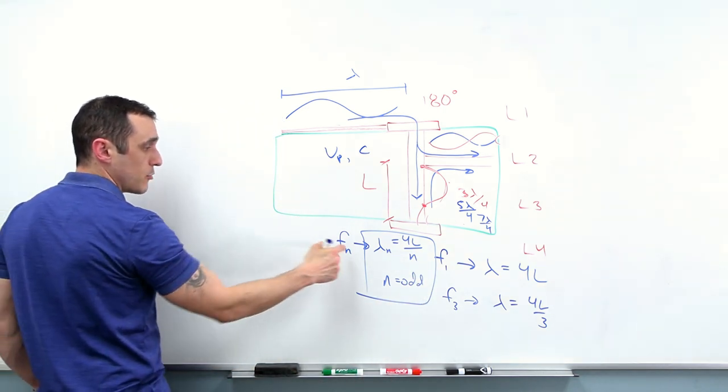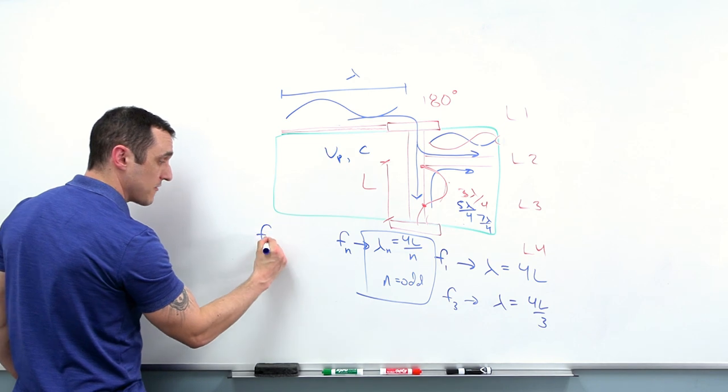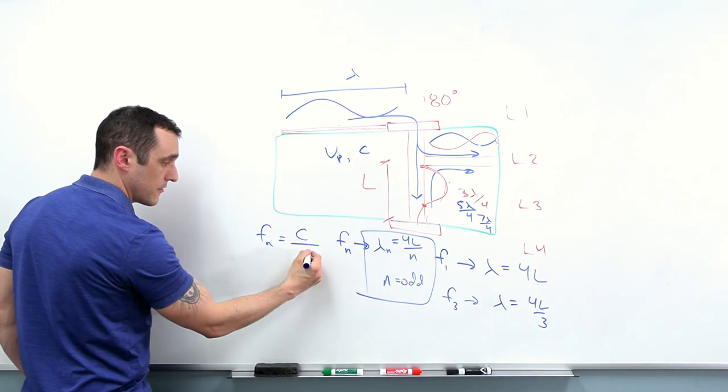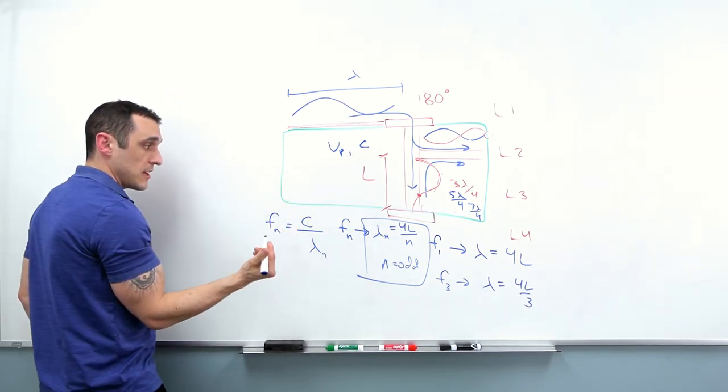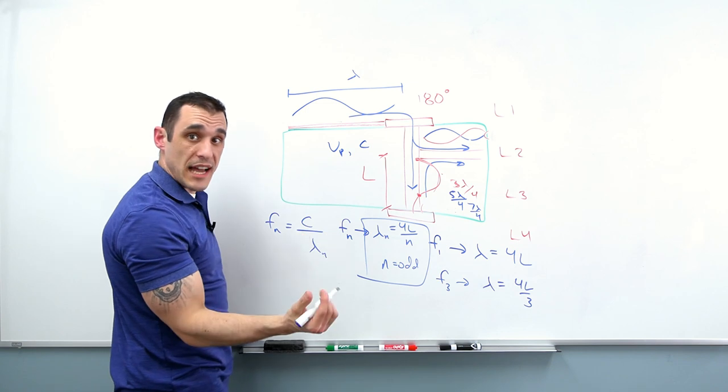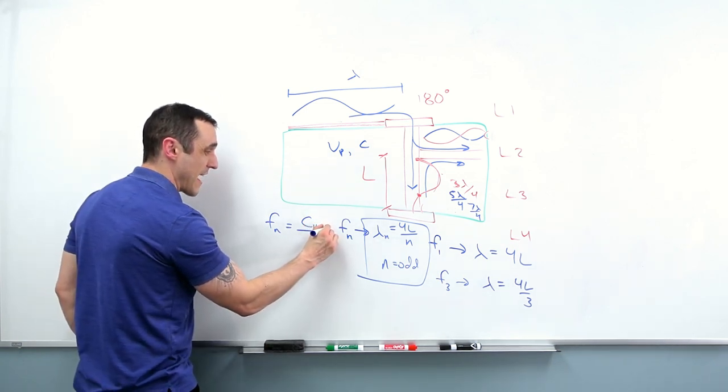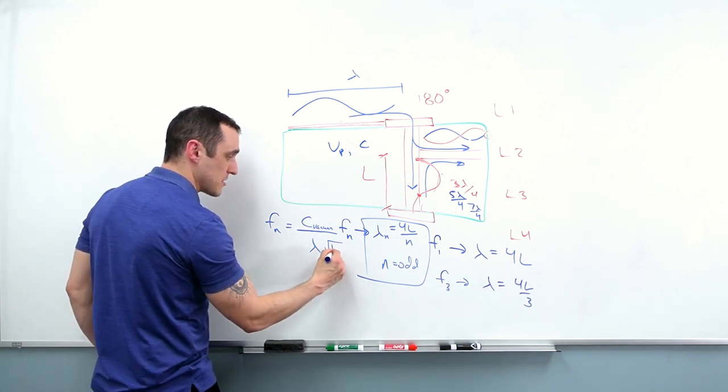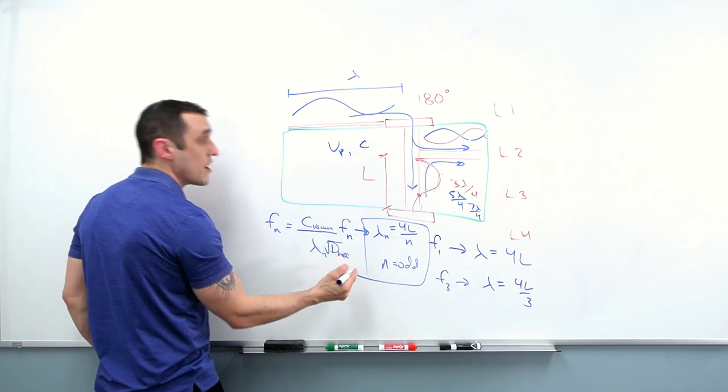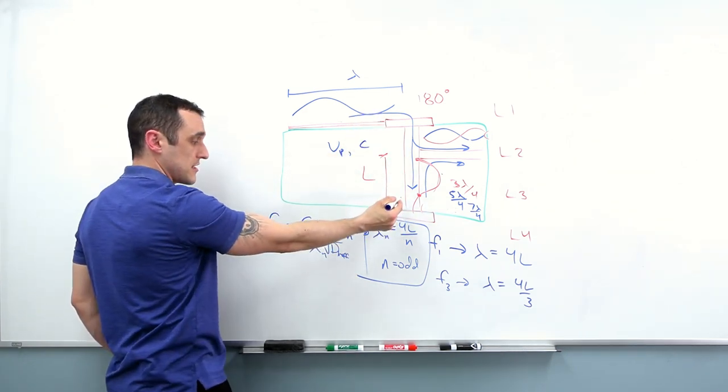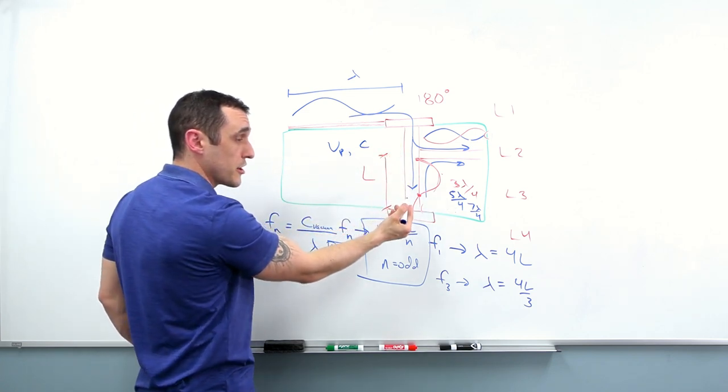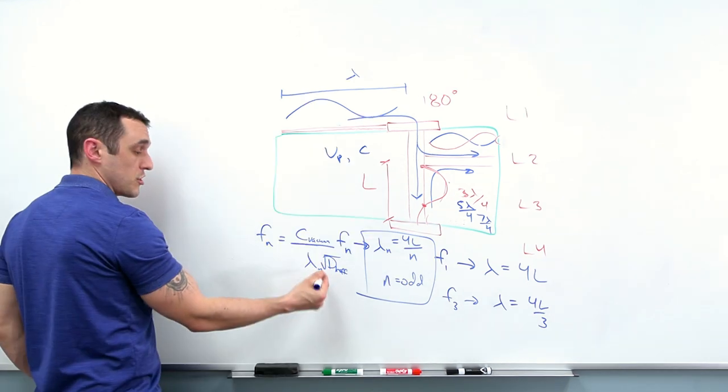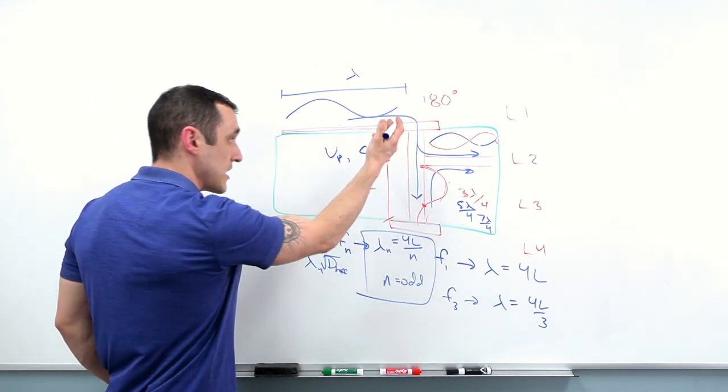then we would know that we can solve for the frequencies F sub N is just equal to whatever the value of speed is in this interconnect divided by lambda sub N. This value for the speed of this wave is just the speed of light in the material. So that's speed of light in vacuum divided by lambda sub N times square root of DK effective. So there's some effective dielectric constant that the signal actually sees as it travels through here. It's not just the value of DK that you read off of the data sheet. There's actually a formula you can use to calculate DK effective inside of this structure.